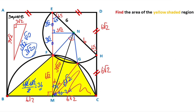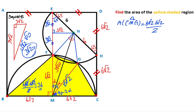If you focus on triangle CMG, the area equals 6√2 × 6√2 / 2 × sin(90 − 2α). If you simplify the expression: it becomes 36 × cos(2α). You know that sin(90 − 2α) equals cos(2α), and we had calculated sin(2α) as 3/5.